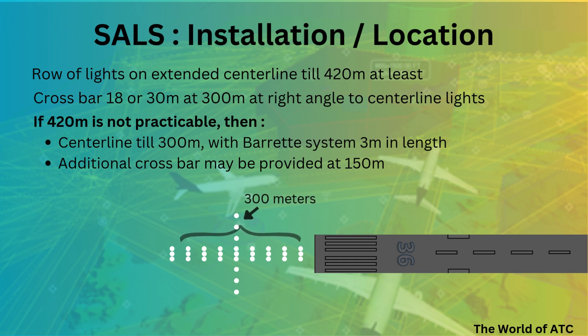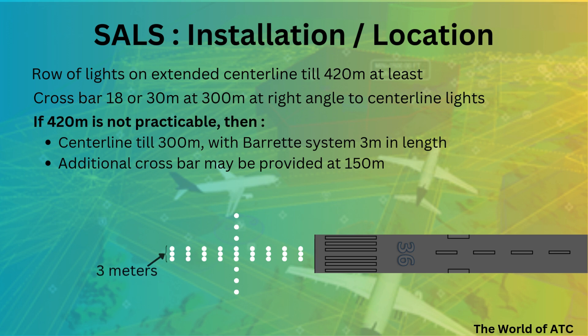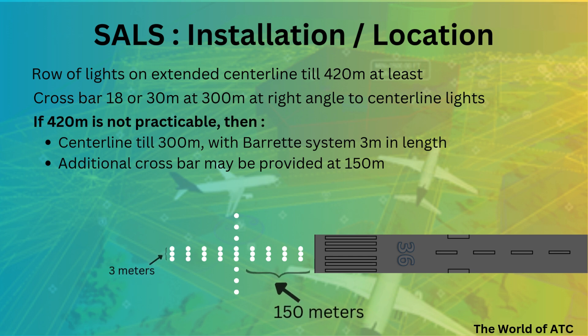Even if 300 meters is not practicable, it shall be provided as far as it is practicable. However, if the length of the center line is reduced from 420 meters, the center line would then consist of a barrette system that should be 3 meters in length, and an additional crossbar may be provided at 150 meters.